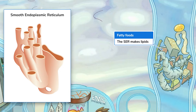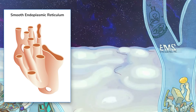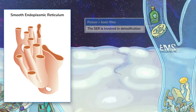This fatty mess does a great job of representing the production of lipids in the smooth ER. But that's not all — the SER is also involved in the detoxification of harmful substances such as drugs, alcohol, and metabolic waste products. This role is especially important in the liver, the main organ for detoxification. The biohazard filter on the bottle of tequila — I mean, poison — is to remind you that the SER gets rid of toxins.